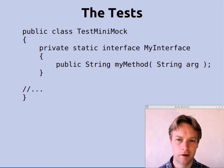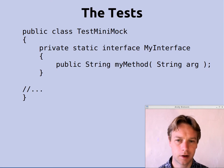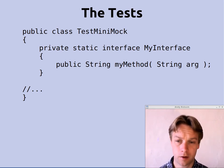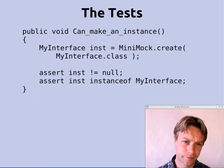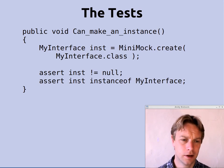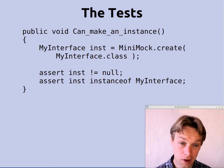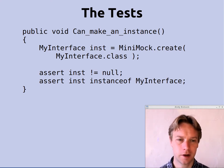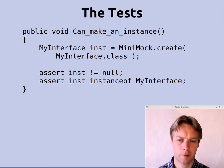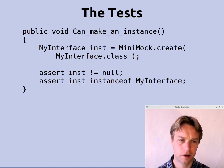So this newMock method basically is magic and returns us an instance of IVictim. We can then call chop on it, and we might also get some functionality like checking what happened to wood when it was passed into the chop method — maybe the cut method was called on it. Here are some tests that demonstrate that our mocking framework works. This is our test class, TestMiniMock. We've got an interface called MyInterface which has one method called MyMethod. It returns a string and takes a single string argument.